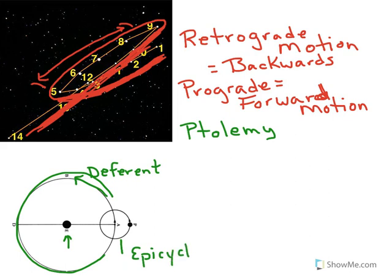And so now the planet, labeled with the P, is on the epicycle, and the epicycle is being carried by the deferent around the Earth. And then the planet is rotating on the epicycle.